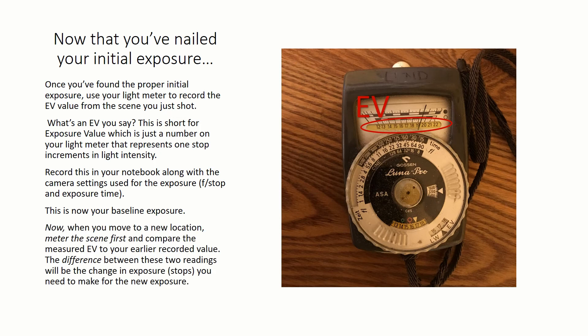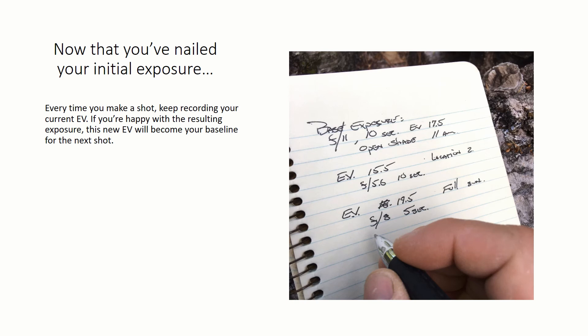Now, when you move to a new location, meter the scene first and compare the measured EV to your earlier recorded value. The difference between these two readings will be the change in exposure, stops, you need to make for the new exposure. Every time you make a shot, keep recording your current EV. If you're happy with the resulting exposure, this new EV will become your baseline for the next shot. In this way, as the quality of the light changes throughout the day, your EV baseline will track the change in light quality, keeping your exposures more accurate.